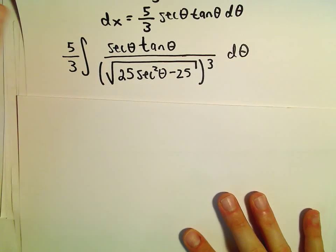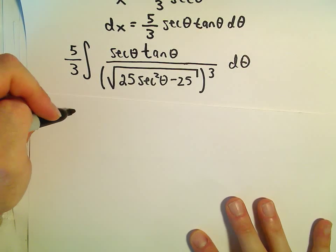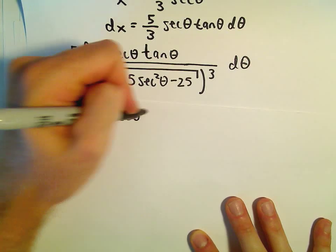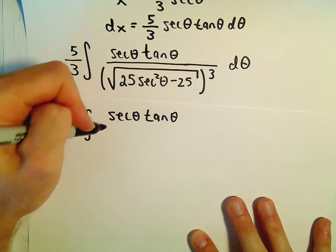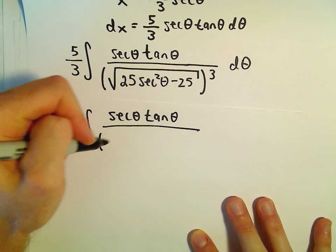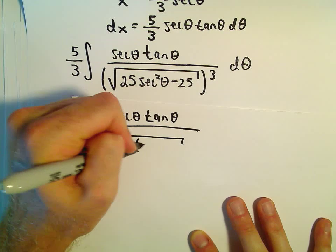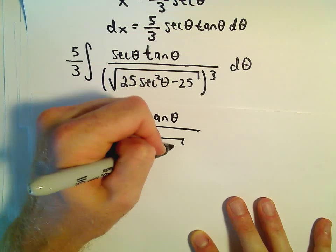So let's just keep factoring and using our trig identity to simplify. So we have secant theta, tangent theta. In the denominator, we would have the square root. We could make this just 25. And then secant squared theta minus 1.